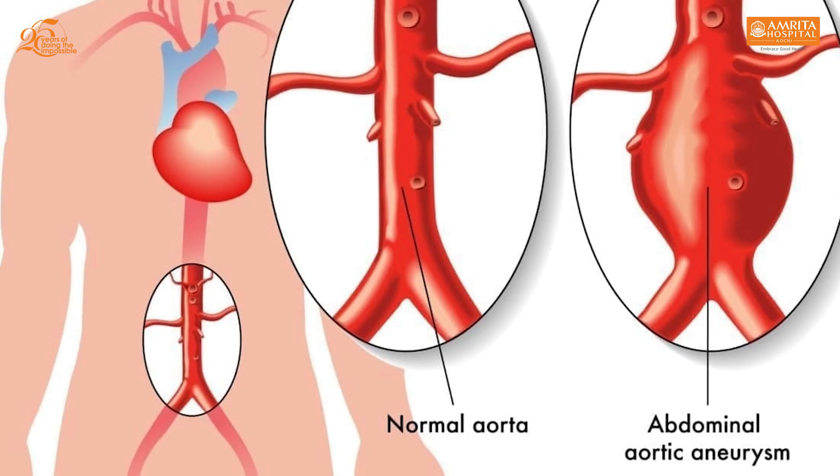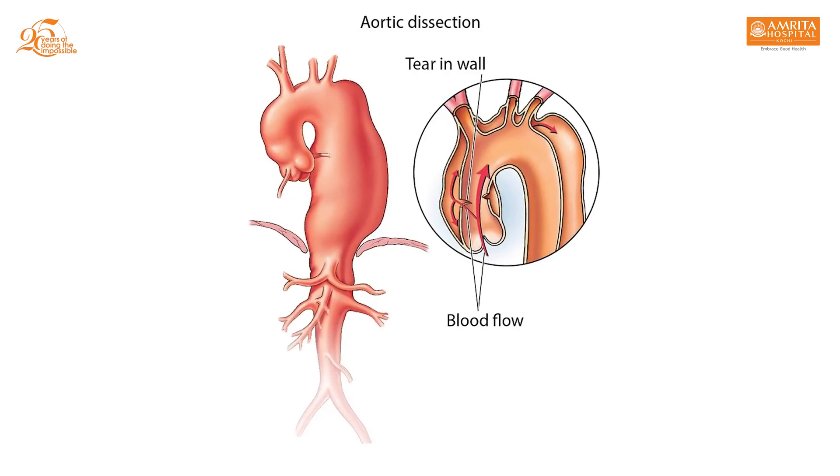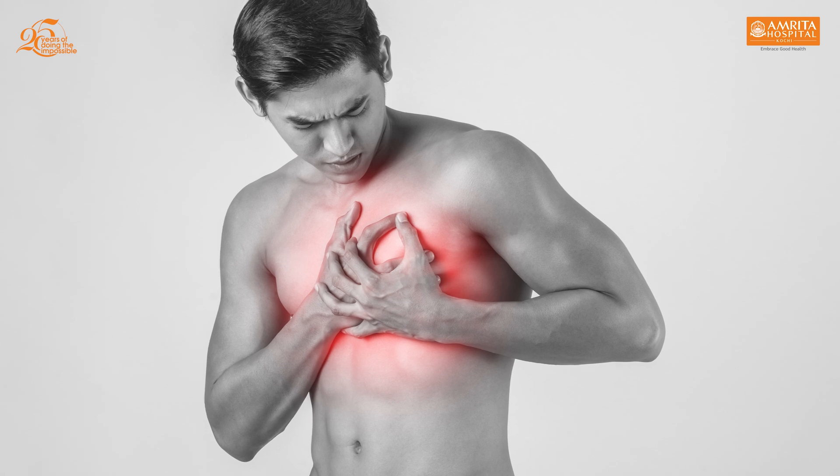Diseases of the aorta are not very common. The two common diseases of the aorta are an abnormal enlargement of the aorta called aortic aneurysms, or the occurrence of a tear in the wall of the aorta which leads to blood passing into the wall — a condition called aortic dissection. Both of these diseases, though uncommon, can lead to life-threatening complications like rupture and eventually death.